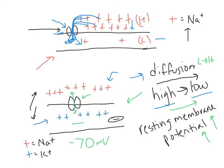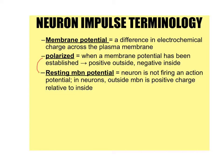These terms mean pretty much the same thing: a neuron is polarized, or it's in its resting membrane potential, when it's sitting at negative 70 millivolts. Remember, that's just like a mousetrap that is ready to fire. If the stimulus is enough, the mousetrap will fire — same thing with a neuron. It's sitting in its resting membrane potential waiting for a stimulus great enough to make it fire an action potential.